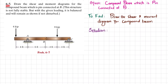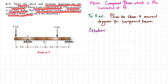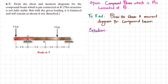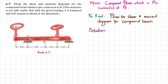Welcome back. Problem 6-7: draw the shear and moment diagram for the compound beam which is pin connected at B. This structure is not fully stable, but when the given load is applied it is balanced and will remain so if not disturbed. This is a compound beam pinned together at point B, with loads which keep it stable.